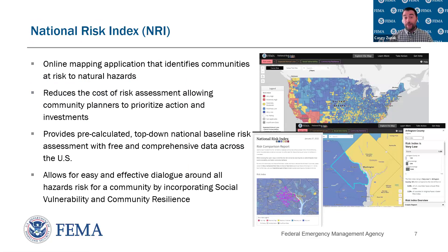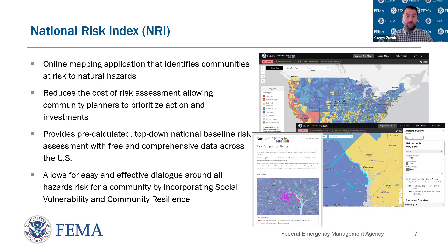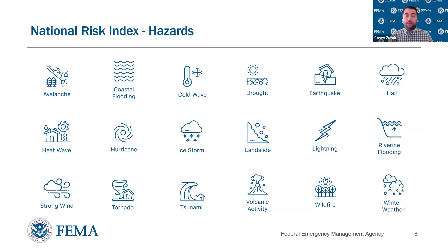I'd like to give some background on the National Risk Index first. The NRI is a tool that allows everyone to understand differences in hazard risk across the country. It measures hazard risk through expected annual loss for 18 different natural hazards, and also brings in components of social vulnerability and community resilience, so we can understand how communities may be disproportionately impacted by a hazard. We measure this at both the county and census tract levels — census tracts have about four to seven thousand people per unit of geography. The 18 hazards range from avalanche to wildfire, extreme heat, winter weather, drought, earthquake, tsunami, hurricane, and landslide — all with nationally available data routinely updated by federal or state organizations.